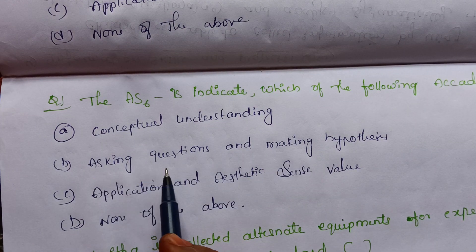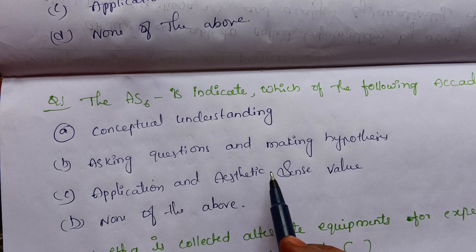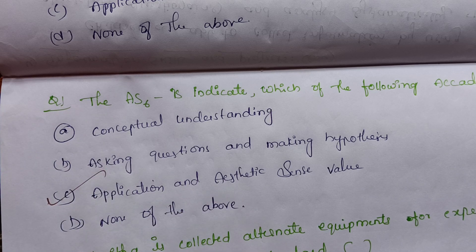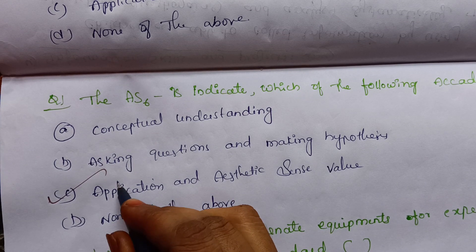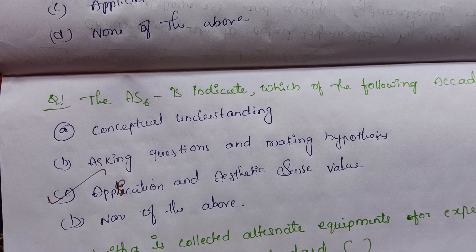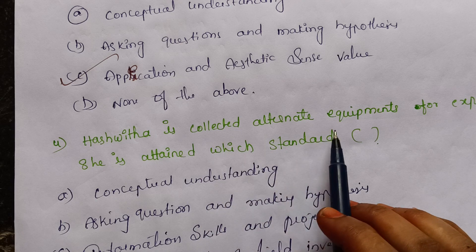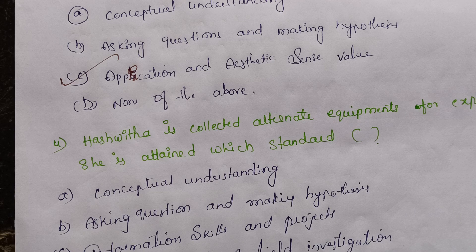The sixth academic standard is appreciation and aesthetic sense. The next question: Ashwita has collected alternative equipment for an experiment. Which academic standard is she attaining? Option A: conceptual understanding. Option B: asking questions and making hypothesis. Option C: information skills and projects. Option D: experimentation and field investigation.